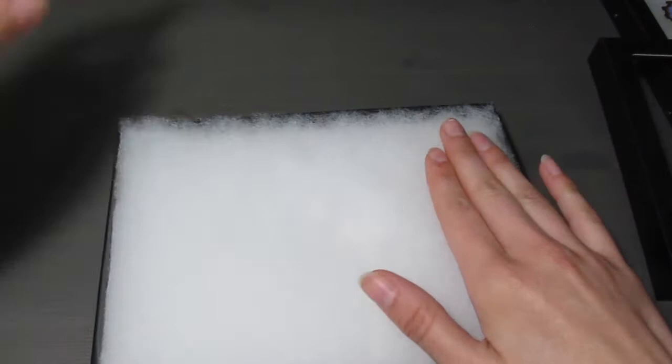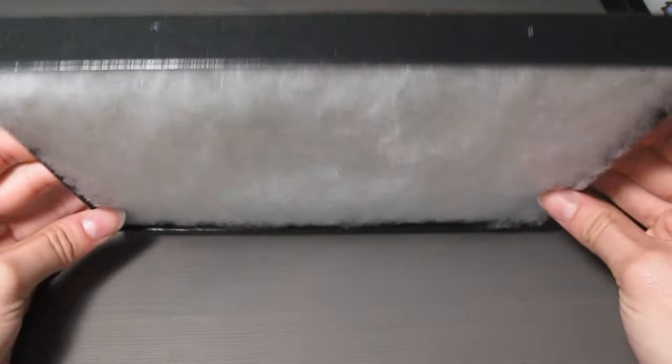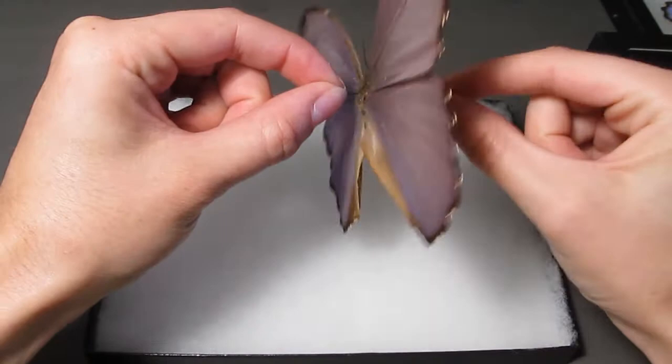After the indentations have been made, we can remove the butterfly from the pin and onto the cotton. Then, use forceps to adjust the butterfly until it's in the right spot. Make sure the body is aligned with the indentations we just made for it.